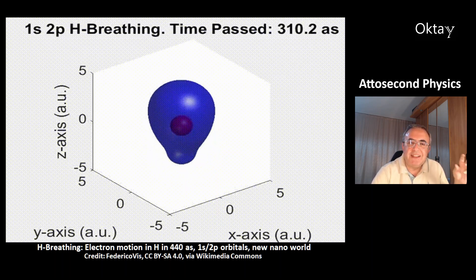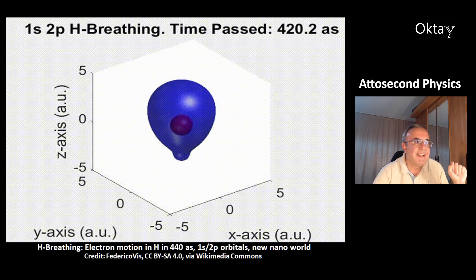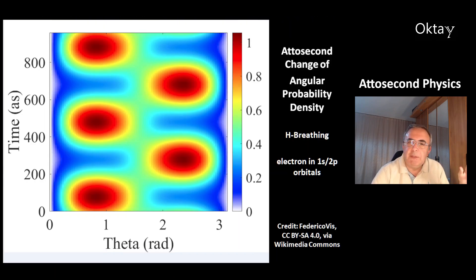Attosecond physics is a new nanoworld and it's very fascinating. This is another picture of the attosecond change of angular probability density. X axis is distance from the nucleus. Y axis is time. And color is density. Red is highest density, electron density. You can again see the hydrogen breathing over time. The change from the 1s orbital to the 2p orbital and back.